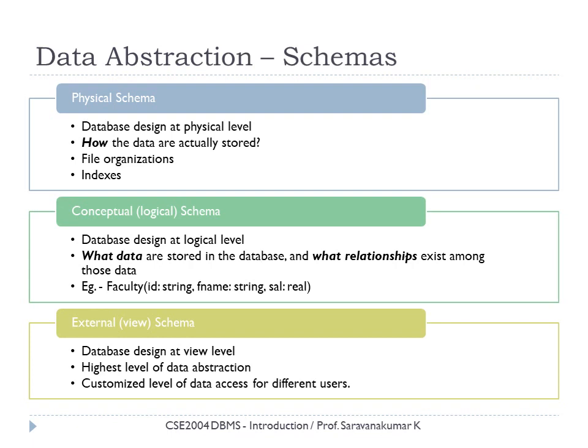At the next higher level we have the conceptual schema. It deals with the design of the database at the logical level, describing what data are stored in the database and the relationships that exist among those data. For instance, a table may be linked to another table through a foreign key. The conceptual schema also defines the attributes of a table — their names, data types, sizes, and any other constraints.